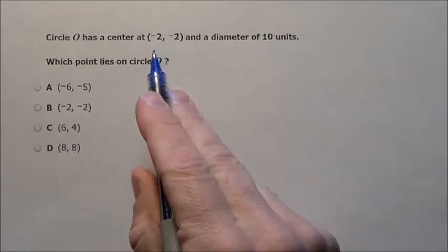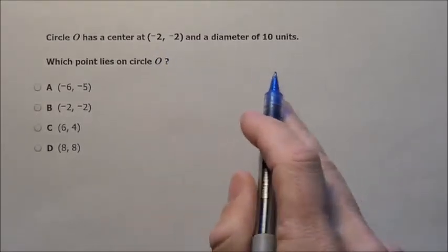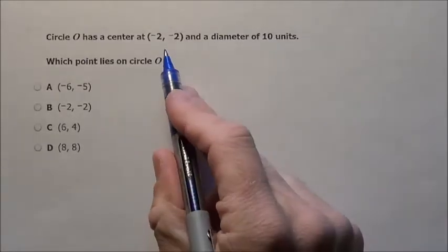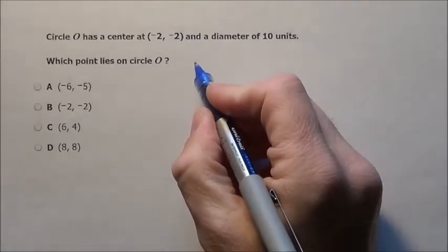Now your first jump is probably saying, oh well, I've got to use the formula for the equation. It doesn't ask anything about the equation. It says you have a center and a diameter of 10. So just imagine this.